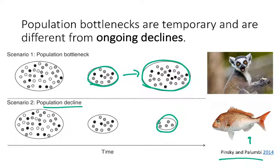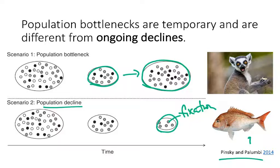There was no recovery — we now have fixation of this particular allele. Overall, populations experiencing ongoing declines are a really big cause for concern. First, you're losing genetic diversity, which isn't easy to replace. And because these populations are now small, they're also going to be even more affected by drift. It's a positive feedback loop where there's a spiral of more and more negative effects for these species.